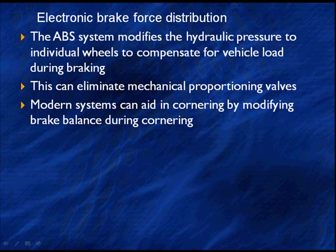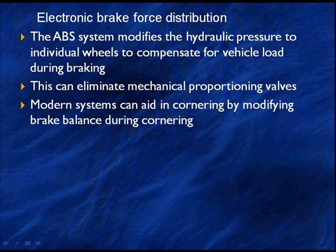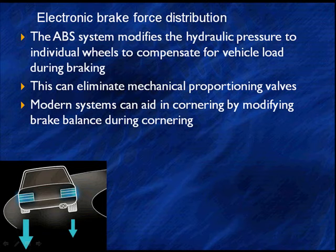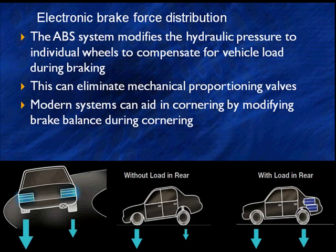Electronic brake force distribution is a different thing. The ABS system modifies the hydraulic pressure applied to individual wheels to compensate for vehicle load during braking. This can eliminate mechanical proportioning valves — we used to have proportioning valves that sent more braking to the front than the rear. It also modifies braking during cornering. During cornering we have more pressure on the left side than the right side, so if we're braking on a corner this system applies greater braking power to the left side. If we have a loaded vehicle with luggage in the trunk it puts more braking on the rear brakes. We do this by looking at the speed of the wheels as they decelerate, applying as much power as needed for maximum braking force. This is one of the ways that ABS reduces stopping distance.